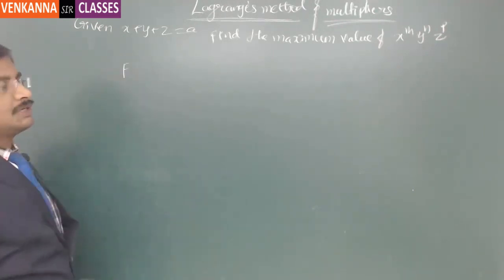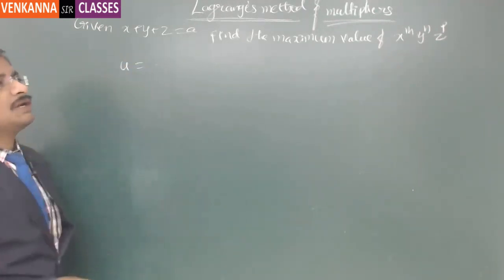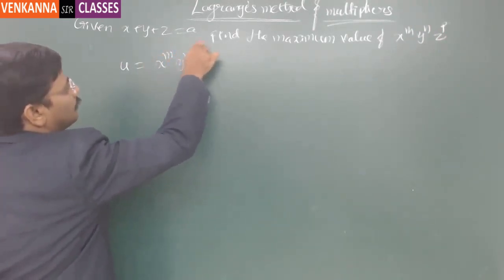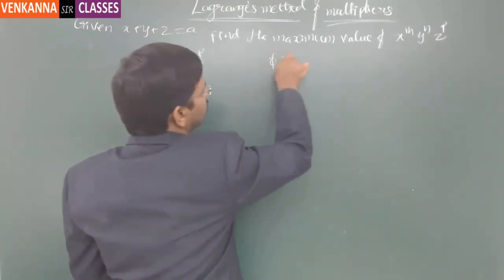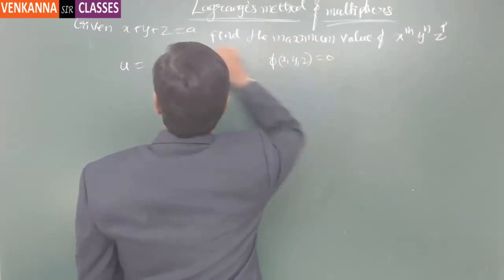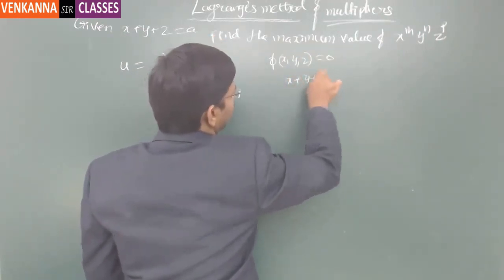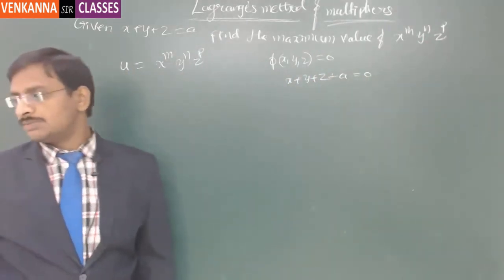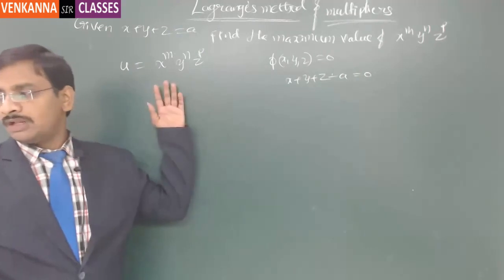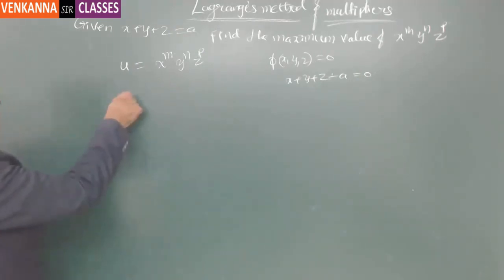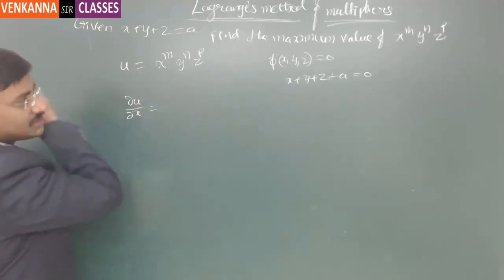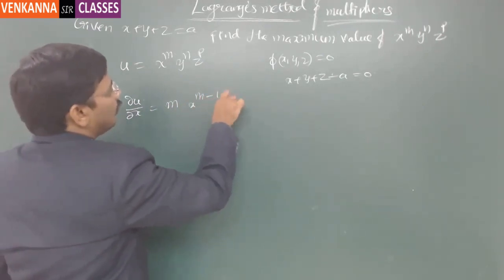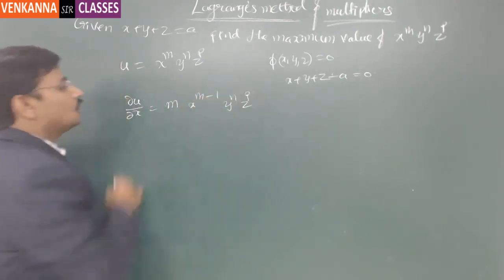We will form the function. The function for which we need to find the maximum value is u = x^m · y^n · z^p. The condition is φ(x, y, z) = 0, which gives x plus y plus z minus a equals 0. Now, ∂u/∂x is m · x^(m-1) · y^n · z^p.